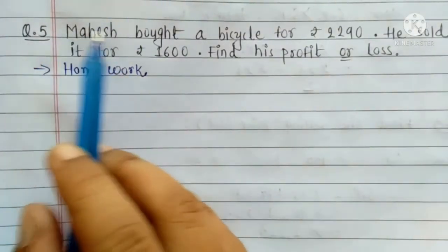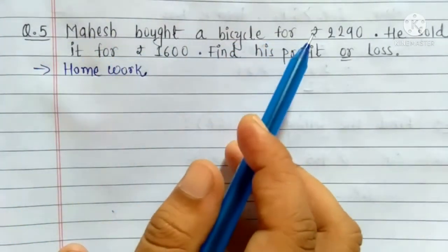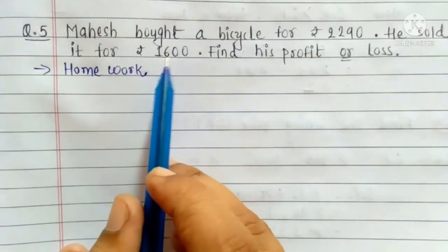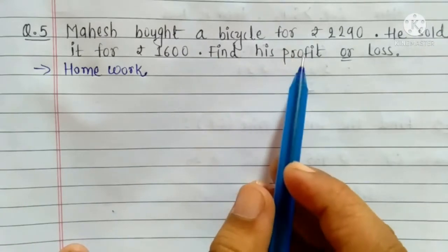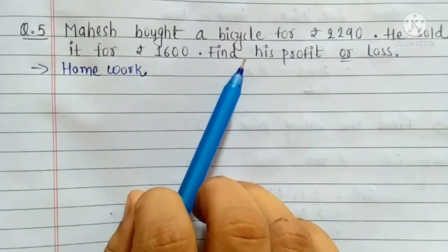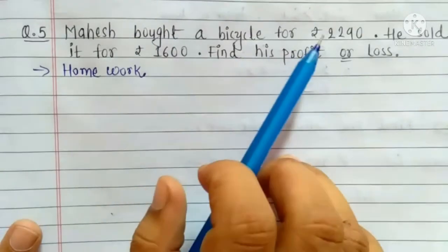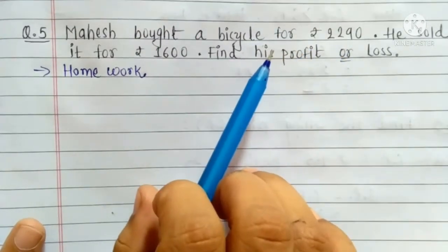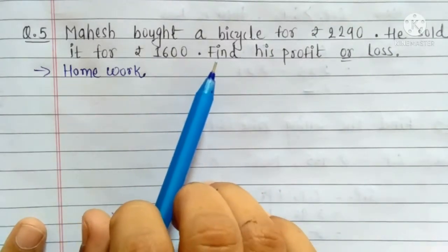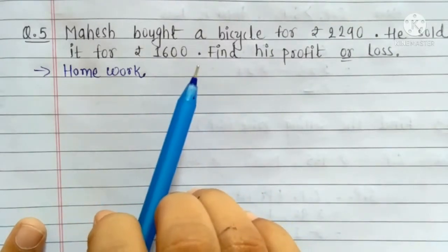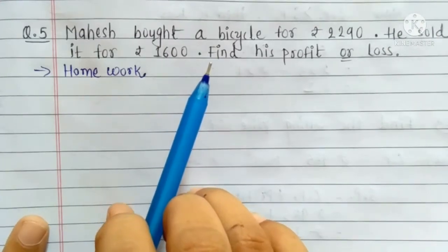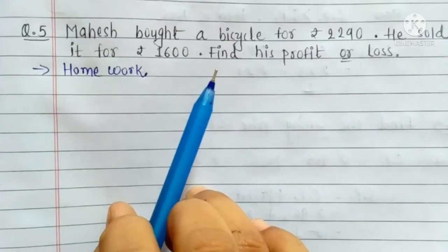Question no. 5: Mahes bought a bicycle for Rs. 2290. He sold it for Rs. 1600. Find his profit or loss. That means, Mahes Rs. 2290 में bicycle को खरीद रहा है और 1600 rupee में बेच रहा है. So, Mahes को यहाँ पे profit हुआ है या loss हुआ है, वो हमें find करना है. This is due in your homework.